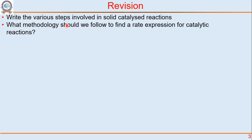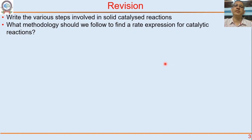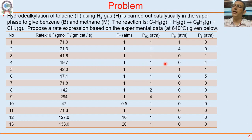Just to help you revise what happened in the previous two lectures: write the steps involved in solid catalyzed reactions, and what methodology should we follow to find a rate expression for catalytic reactions? Think about those two things — it will be an automatic revision. Now, here is the problem; let us get started so that we can understand all of these.